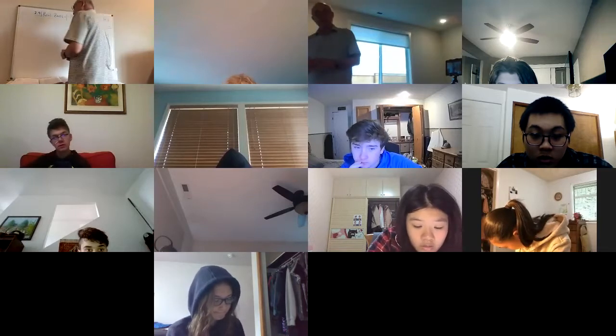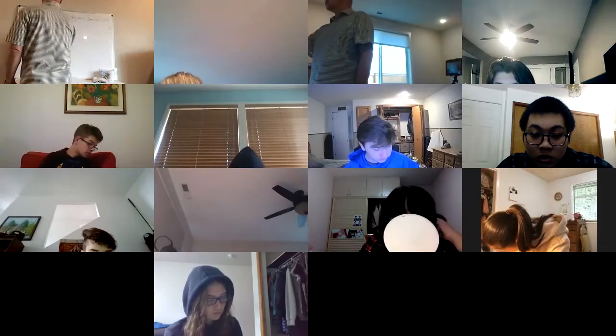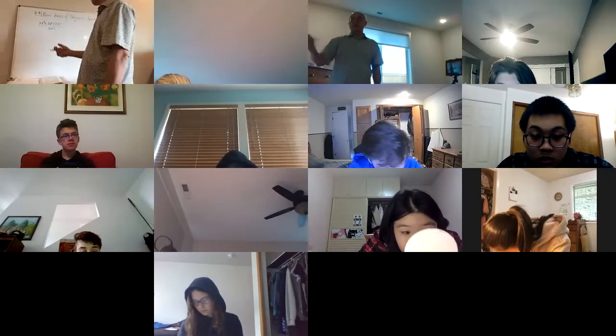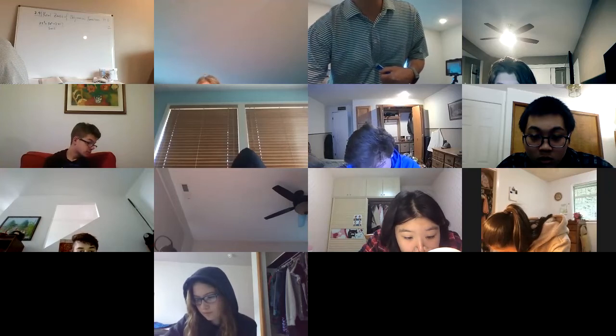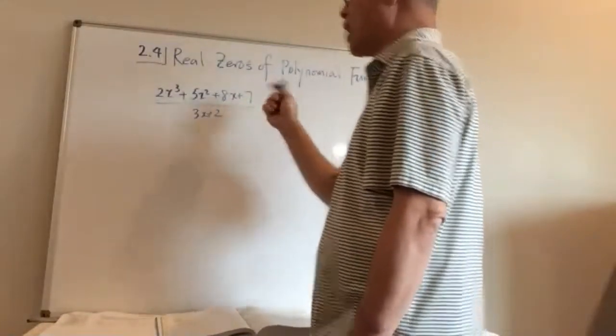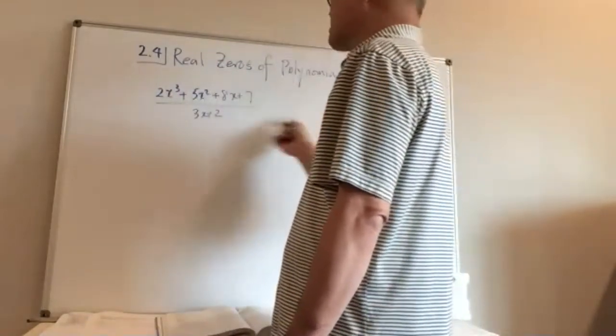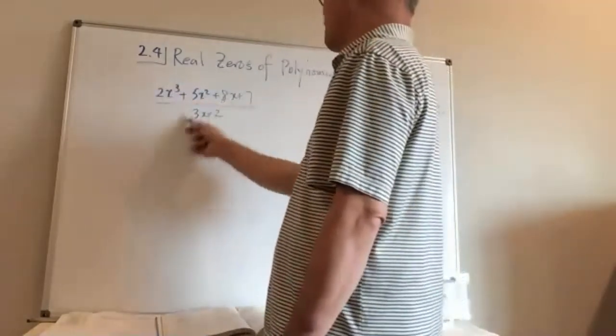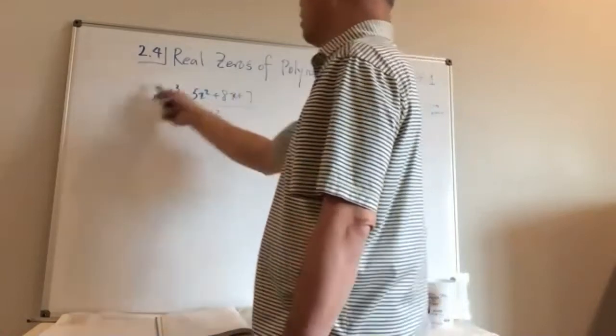Let's see how we do division. We're going to take 2x³ + 5x² + 8x + 7 and divide this by 3x + 2. If this is actually divisible, you would have a quotient and the remainder would be zero. That means this polynomial is divisible by that divisor, making it a zero or root of the numerator equation.